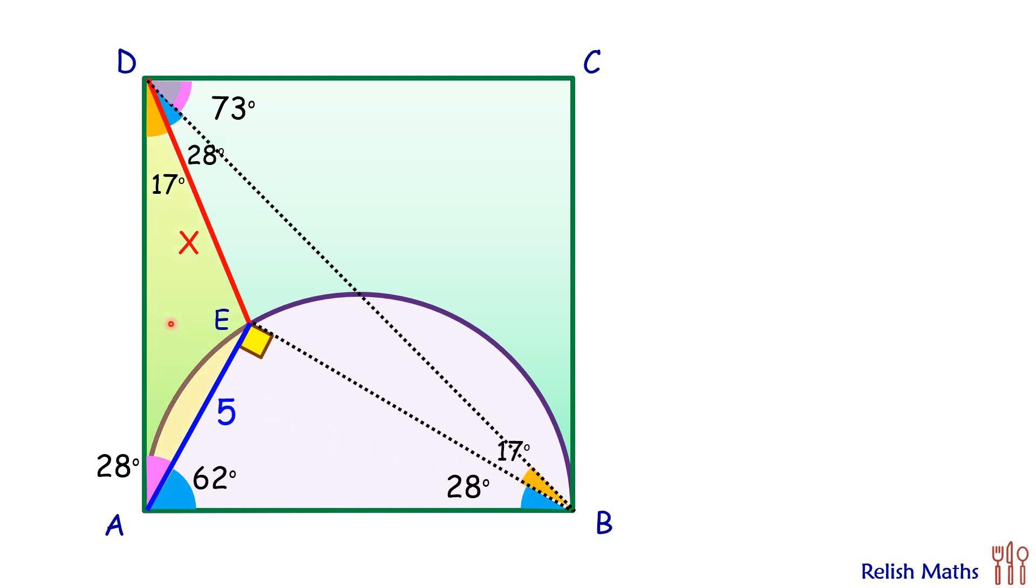Now if you look at the yellow triangle and this blue triangle, we can say that as the two angles are equal—that is 17, 17 and 28, 28—thus by angle-angle similarity, the blue triangle DBE is similar to the yellow triangle ADE.